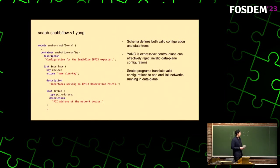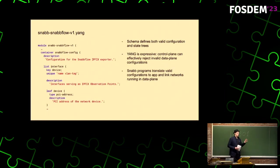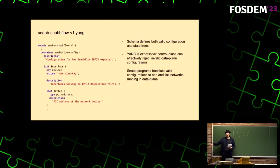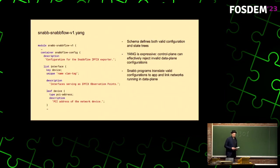For example, we have a list of interfaces, and one of the fields is a device, which is a PCI address. That type is attached to a regular expression that makes sure it actually looks like a PCI address. You cannot just pass any string in there and validate it somewhere down the line — if you don't put in something that at least looks like a PCI address, the configuration won't even be loaded.